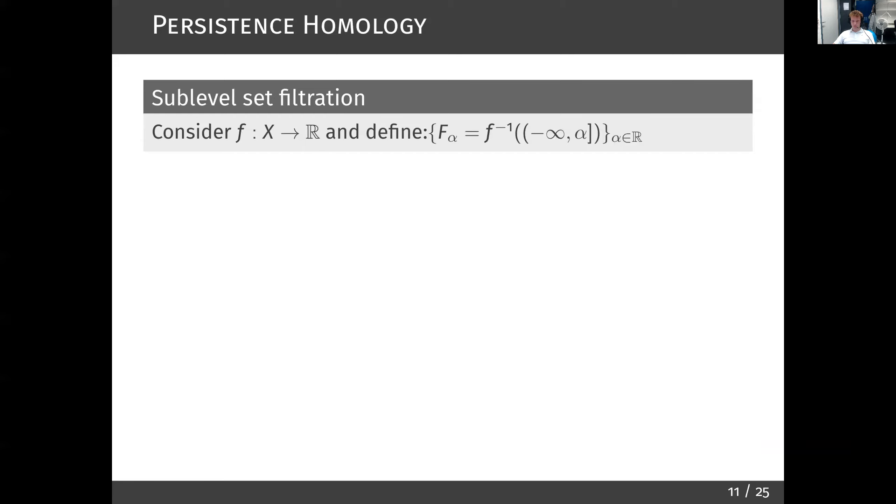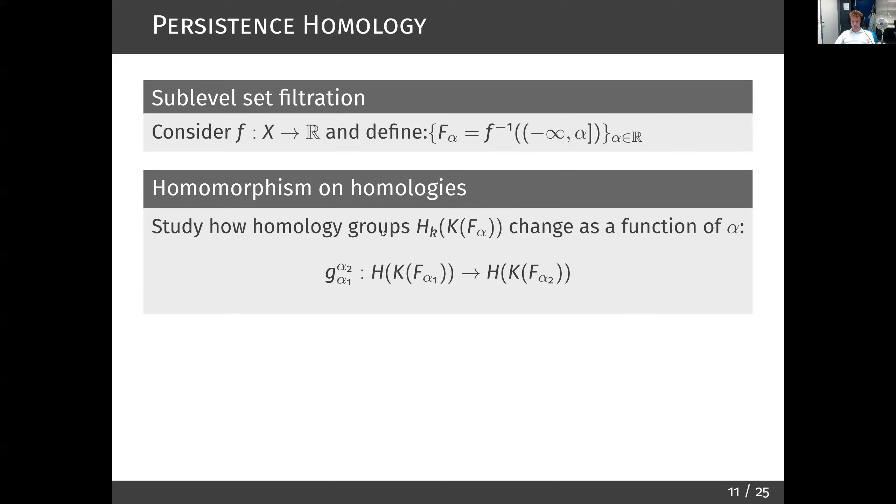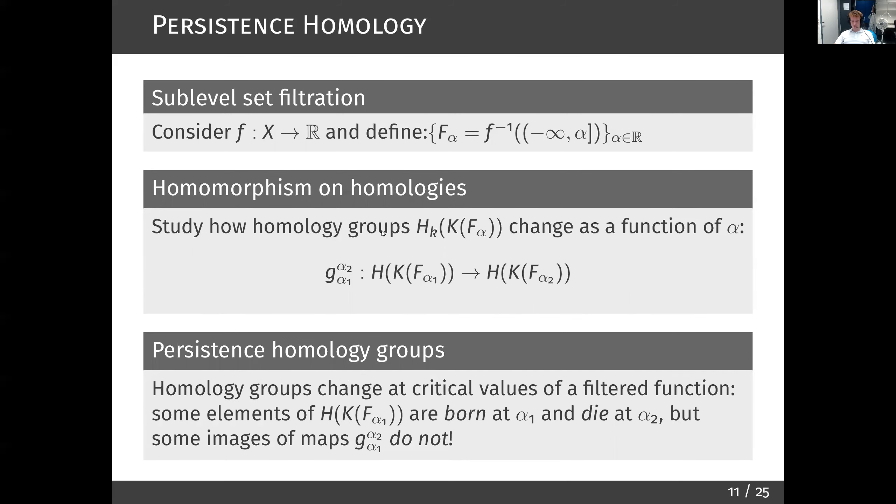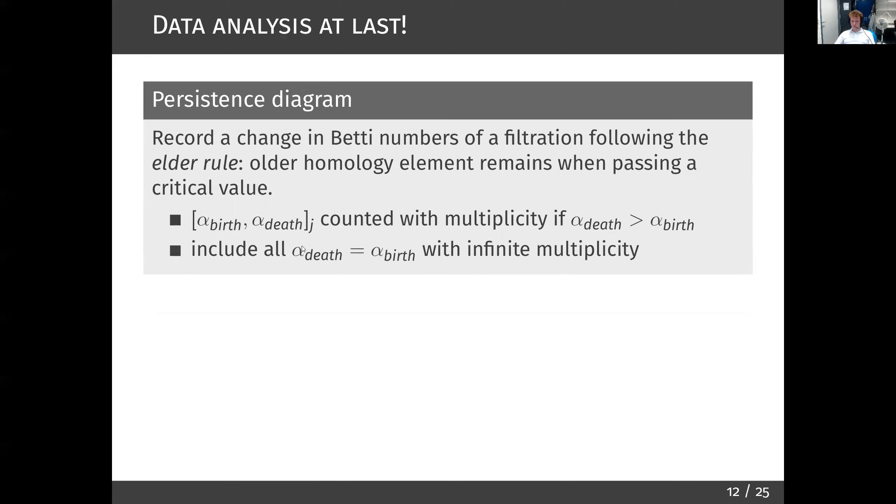More generally, you can consider a real valued function F on a topological space X, and define a sublevel set filtration as a set of all subspaces given by pre-images of the function below each of its values alpha. All pre-images are linked by an inclusion map. Once we construct a simplicial complex K for each of the F alphas, we can obtain a chain complex via inclusion of chain spaces. The inclusion maps between chain complexes induce homomorphisms G between homology groups. Hence, we can track how homology groups change as a function of alpha. It turns out that they change at critical points of a filtered function F. When the change happens, we say that an element of a homology group is born at value alpha 1, it dies at value alpha 2.